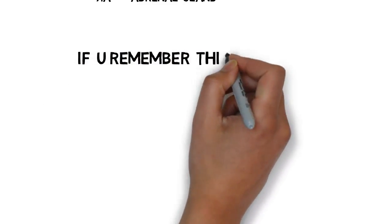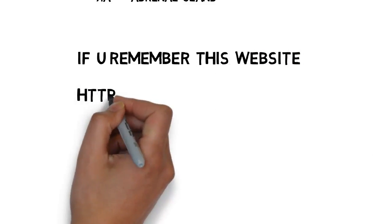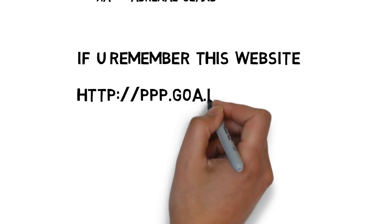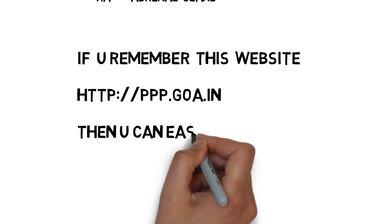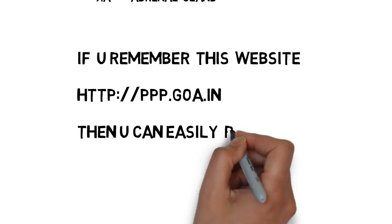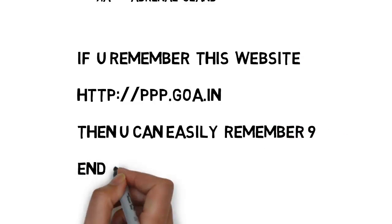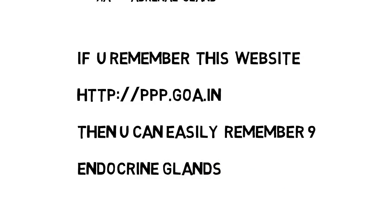So friends, my advice is: nothing is easy, so try to remember this website address. Repeat this website address four or five times so that you can easily remember all nine endocrine glands. The website address is http://ppp.goa.in. Please concentrate on this website address and you can easily remember all nine endocrine glands.